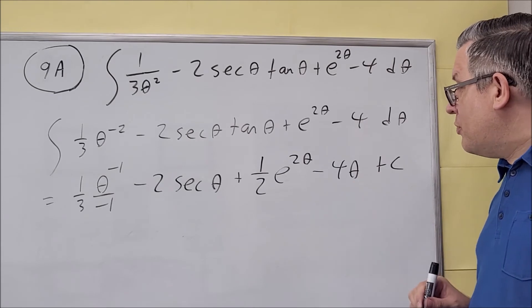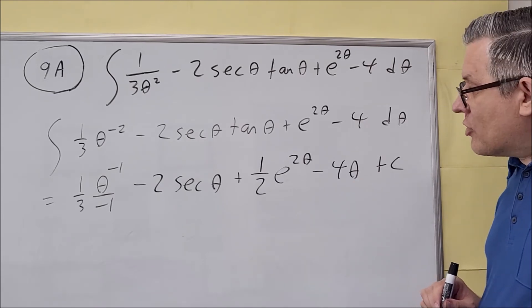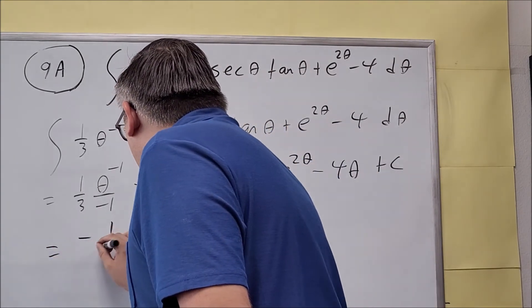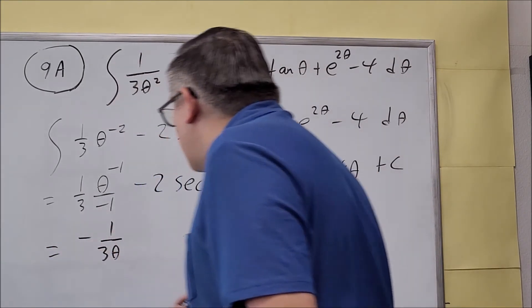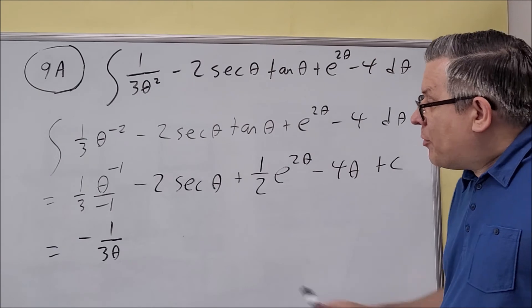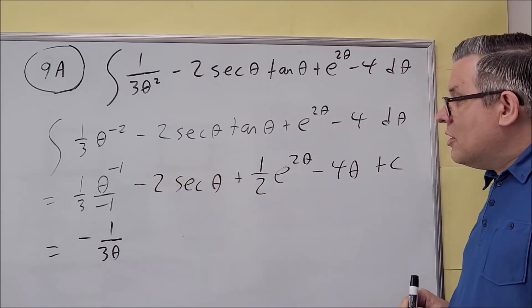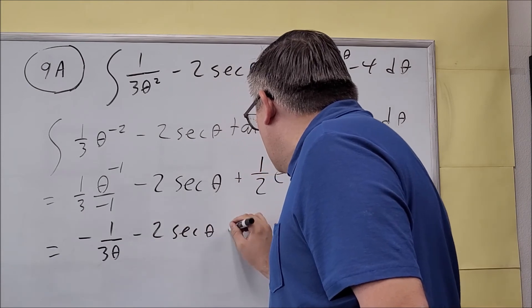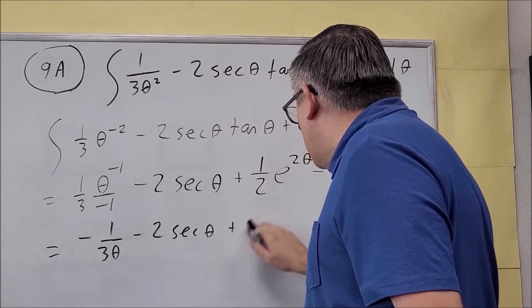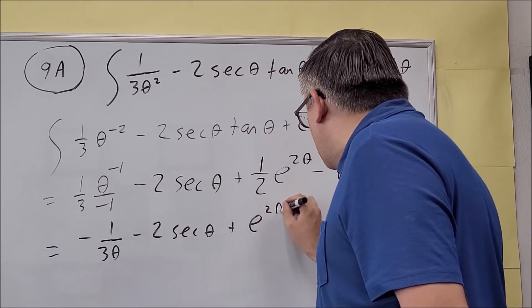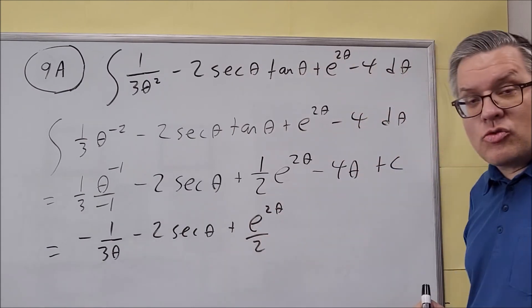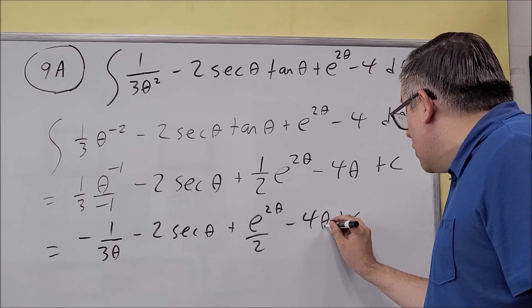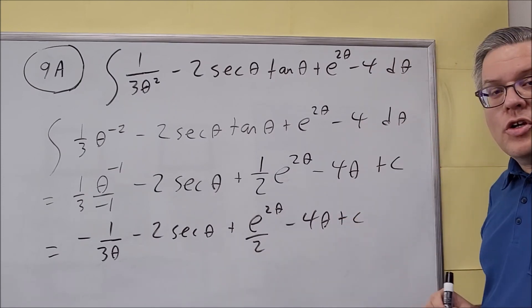The last thing to do would just be to simplify this one, and so we can write this with positive exponents. That would just be negative 1 over 3 theta, is how you can write that part, because that part comes down below. We have a negative out front, and then everything else is going to be the same. You can either keep the 1/2 like that, or if you'd like to write it over 2, that's okay as well. Either one of these would be fine. And then plus c on the end, don't forget that. And so this would be your final answer.